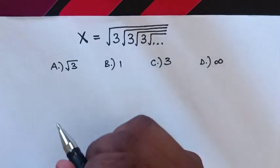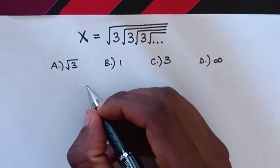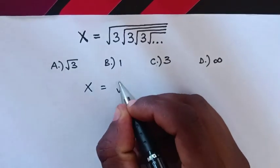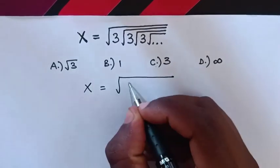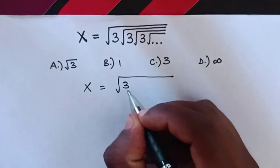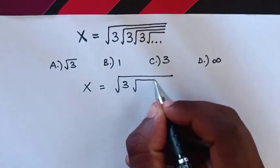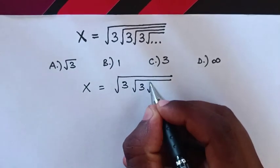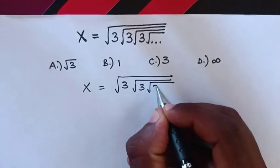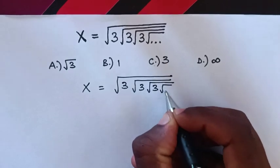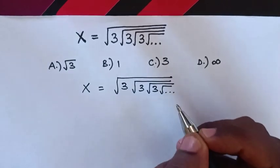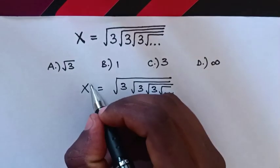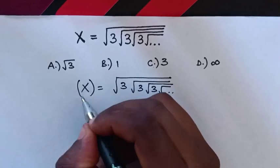First, we square both sides. From our equation, x is equal to square root of 3, square root of 3, square root of 3, square root of 3 and infinite, so we will square both sides.